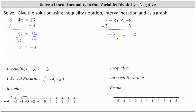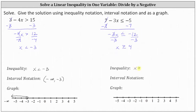Now to solve for x, we divide both sides by negative three. Because we are dividing by a negative, we do need to reverse the inequality. Simplifying, negative three divided by itself is one, leaving us with x. Reversing the inequality, we have greater than or equal to, and negative 12 divided by negative three is positive four. So x greater than or equal to positive four is the solution using inequality notation.